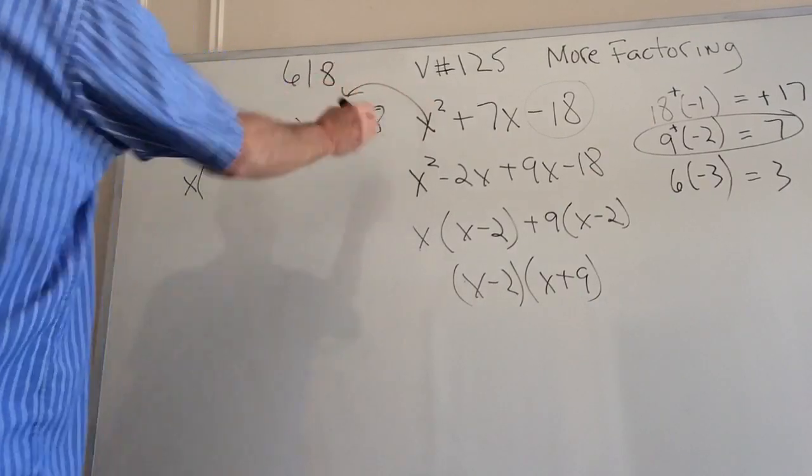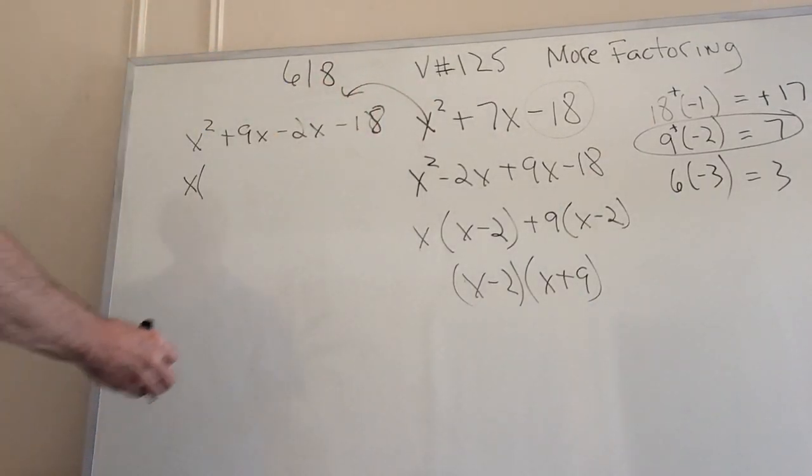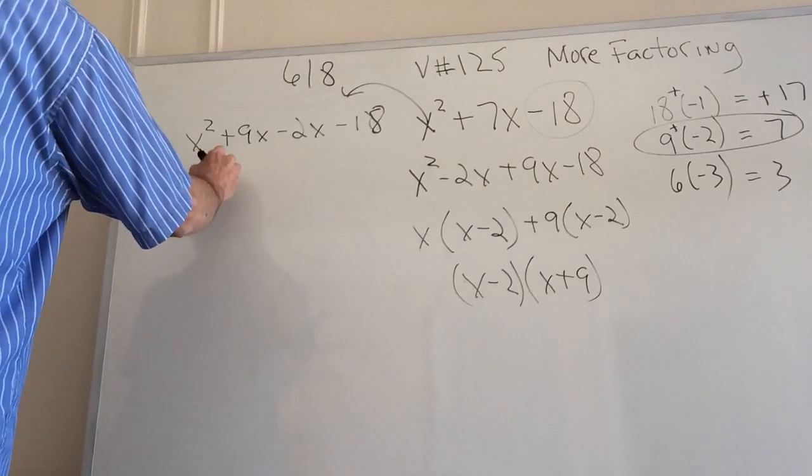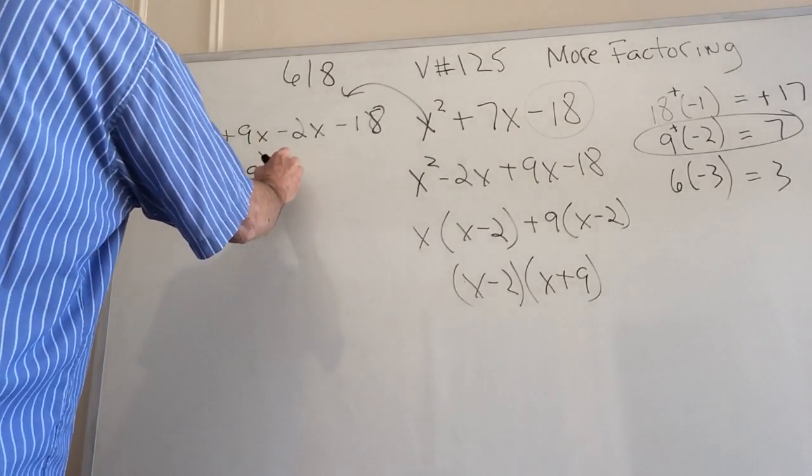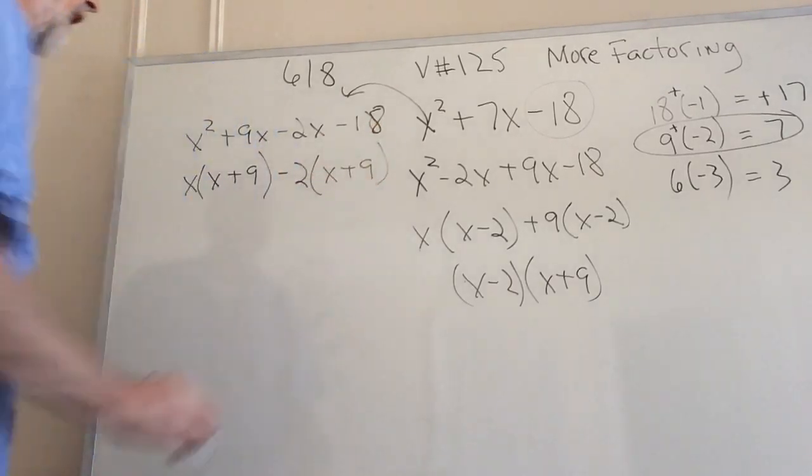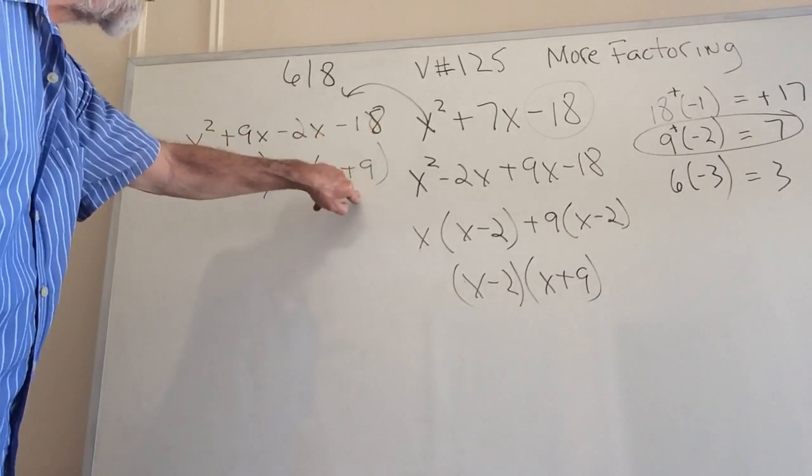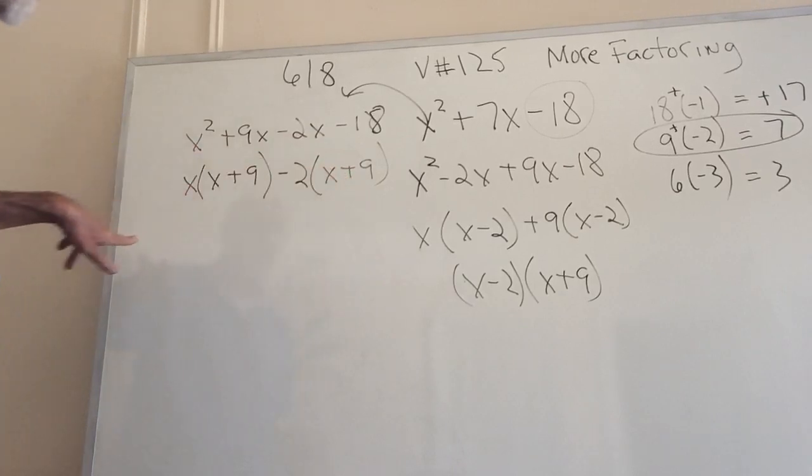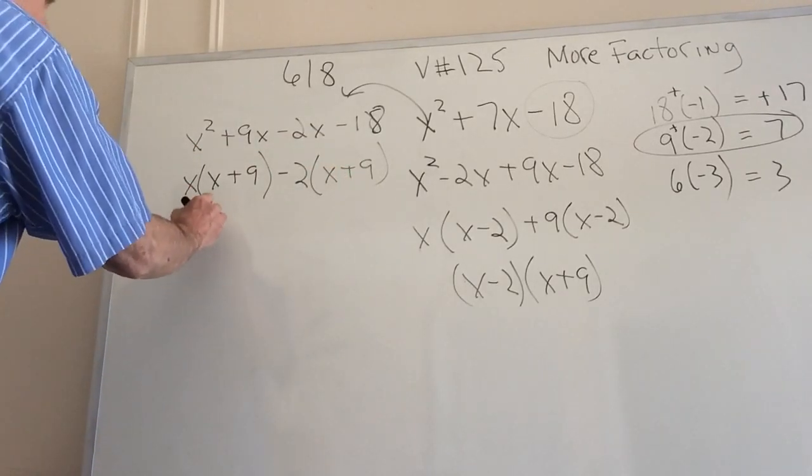Plus 9x minus 2x minus 18. So it's important that you pay attention to me here. And I again go by grouping. Again, this became this. I skipped a step there. I think the class is okay with that. And then I get x plus 9 minus 2x plus 9. How did this turn out to be positive? Negative times a negative is a positive. You can check me backwards.